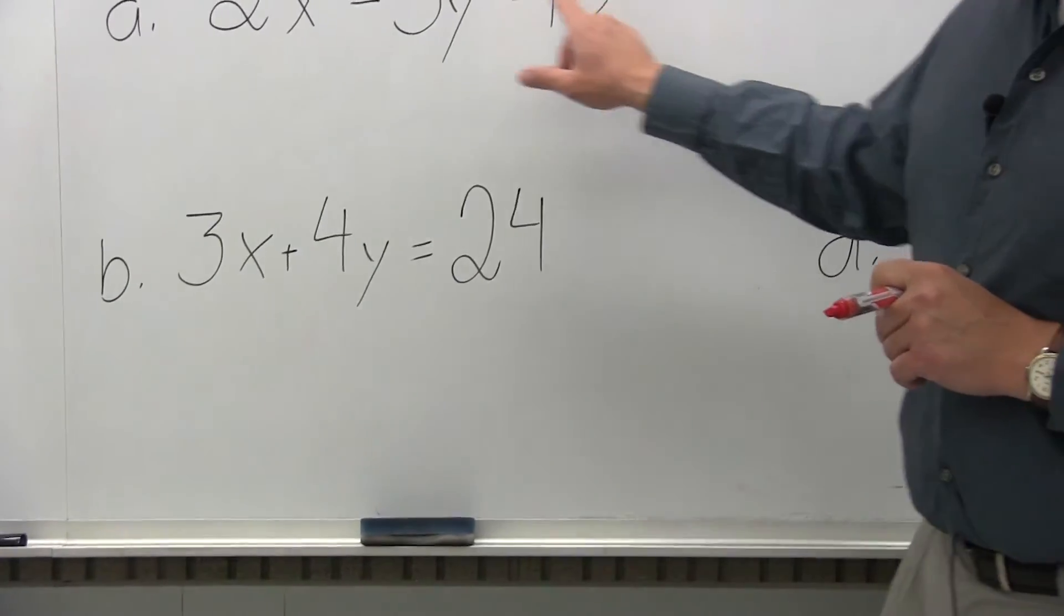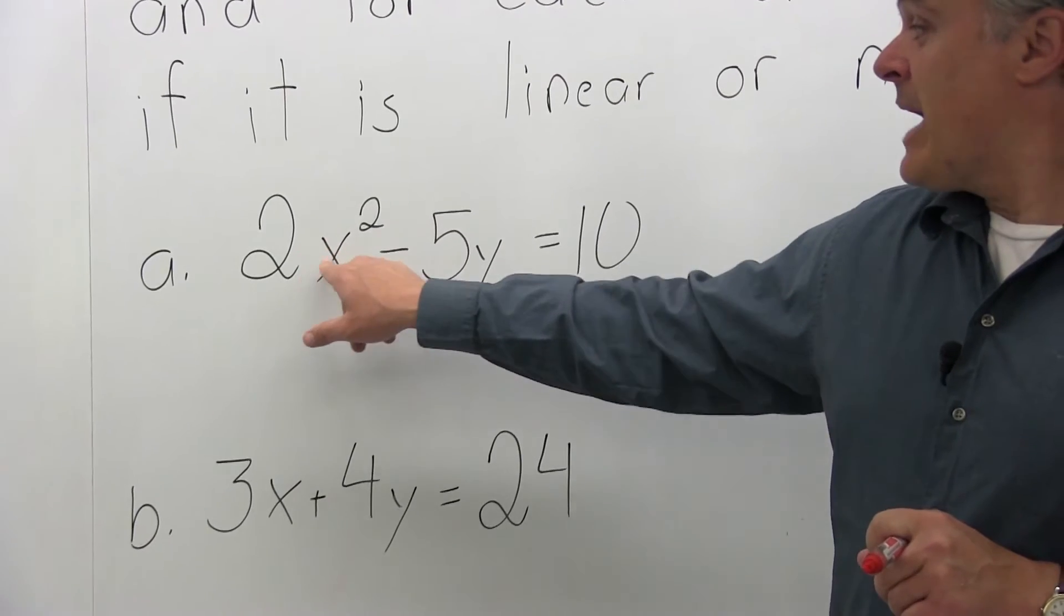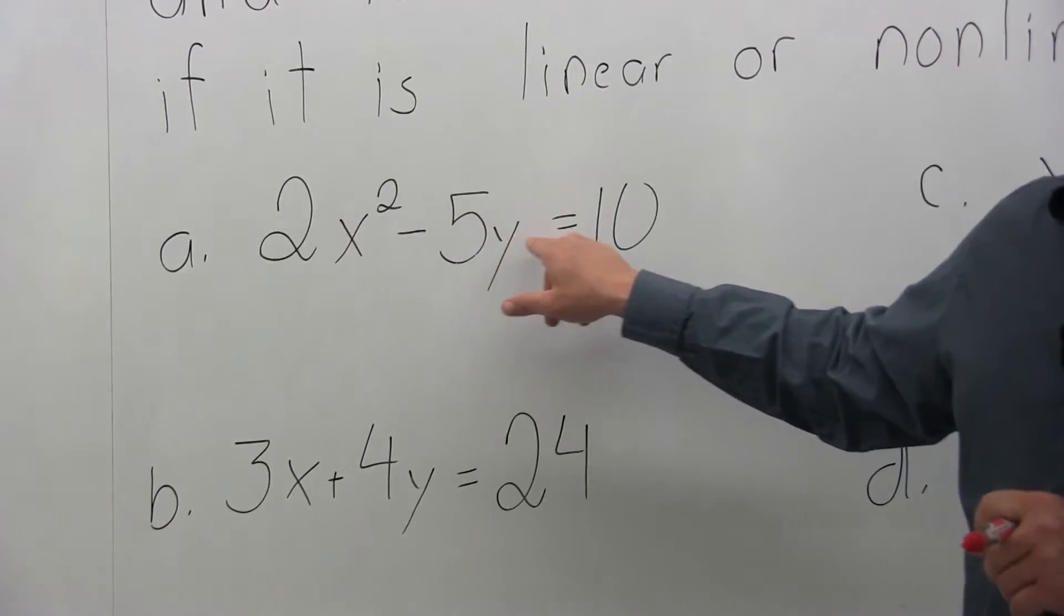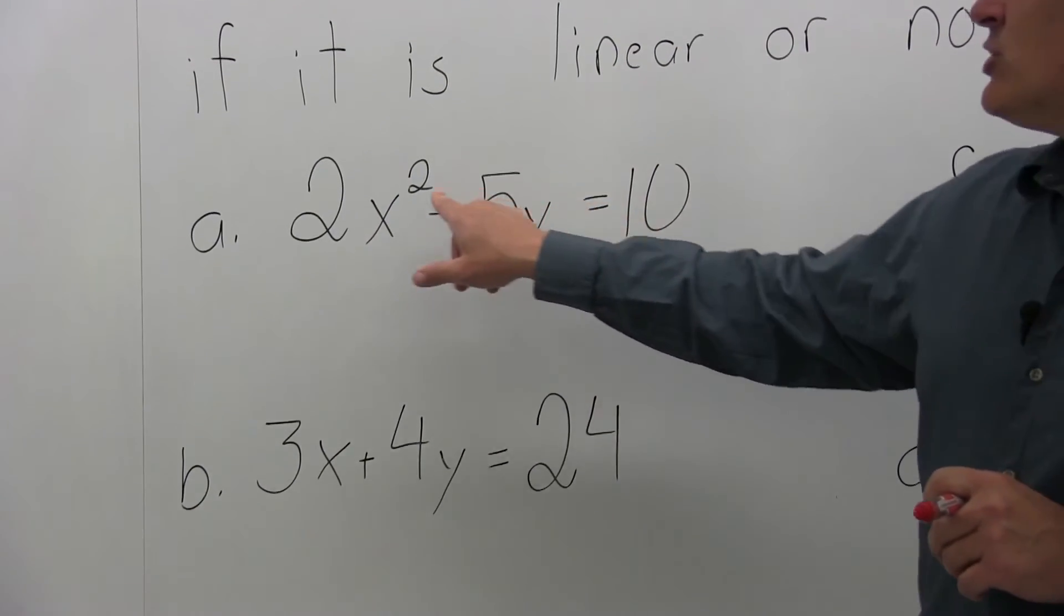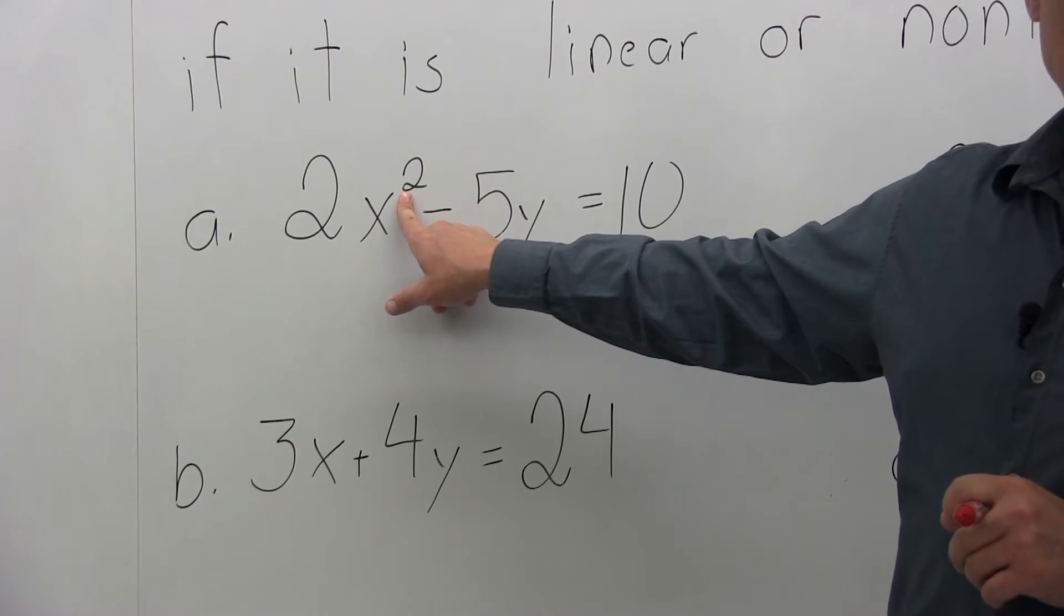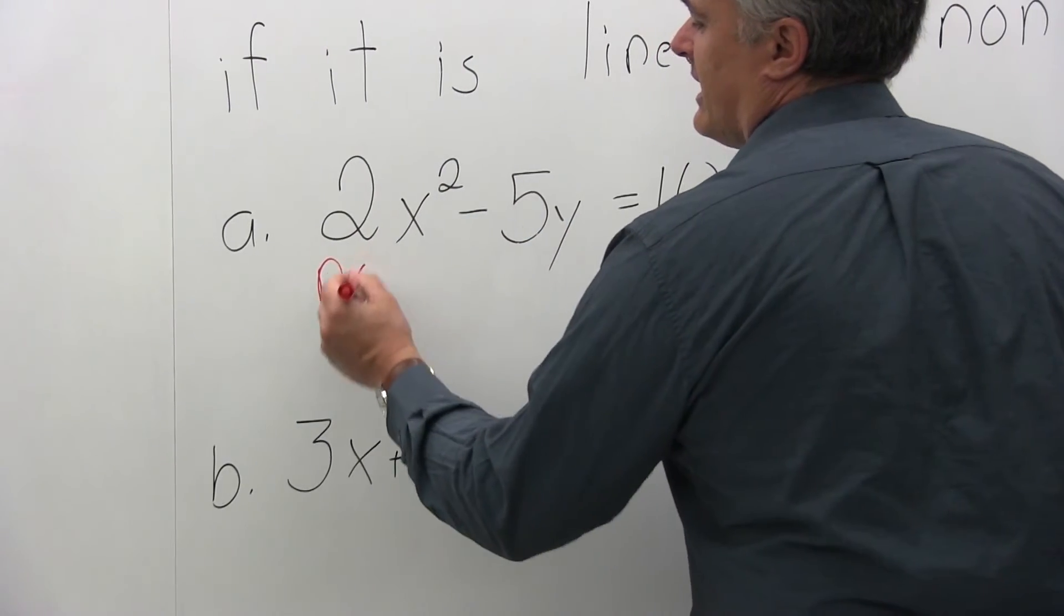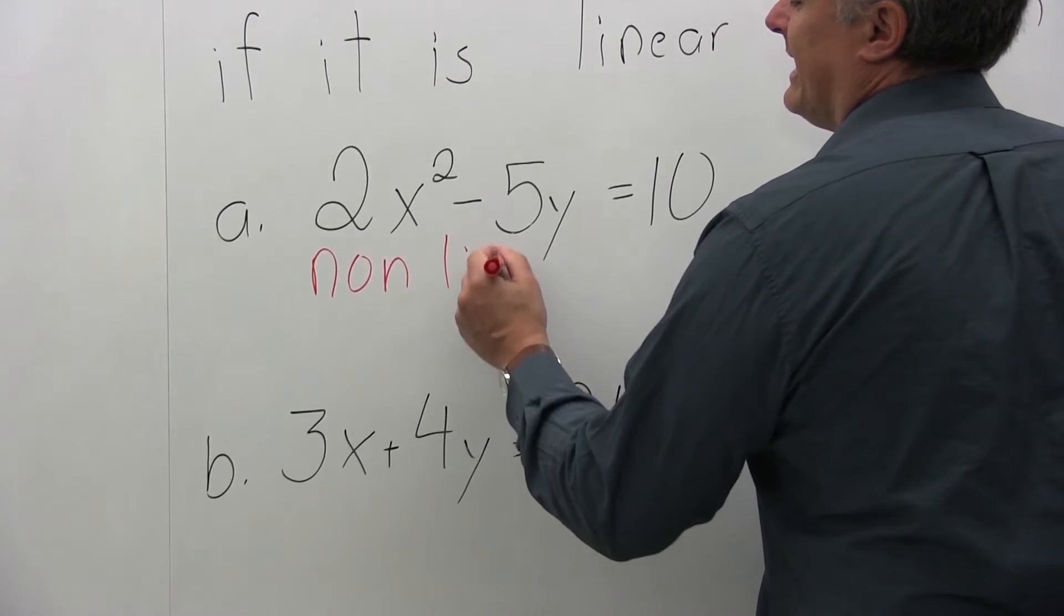Part A, is this linear or non-linear? 2x squared minus 5y equals 10. This is non-linear because of the second power on the x. So for A, the answer is non-linear.